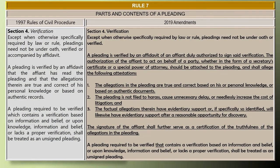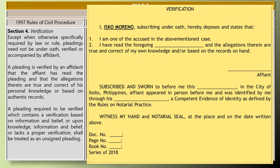What does 'verified' mean? Under Rule 7, on parts and contents of a pleading, the general rule is pleadings need not be under oath or verified. The exception is when the rules or the law specifically require it. Rule 64 specifically requires the petition to be verified. Under the 1997 Rules of Civil Procedure, you verify your pleading by executing an affidavit stating that you have read the pleading and the allegations are true and correct based on personal knowledge or authentic records.